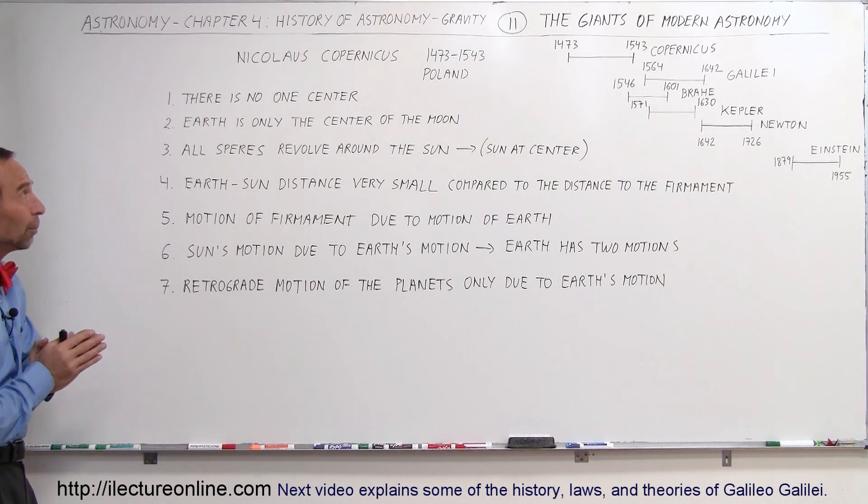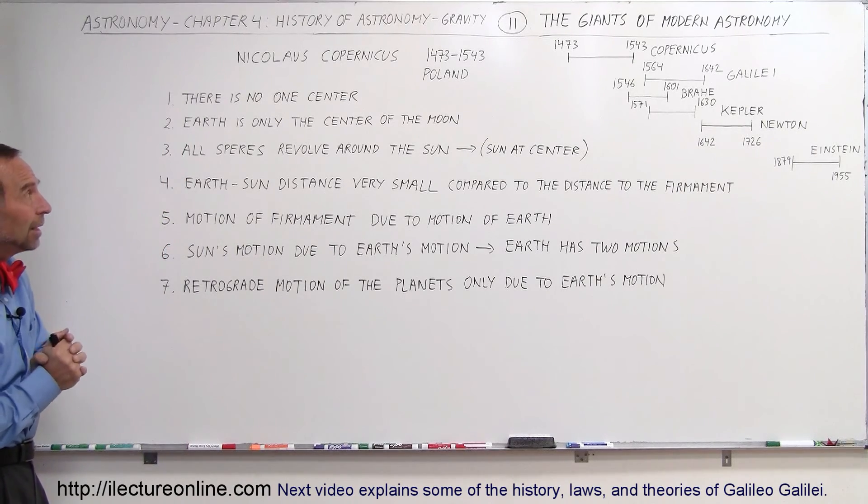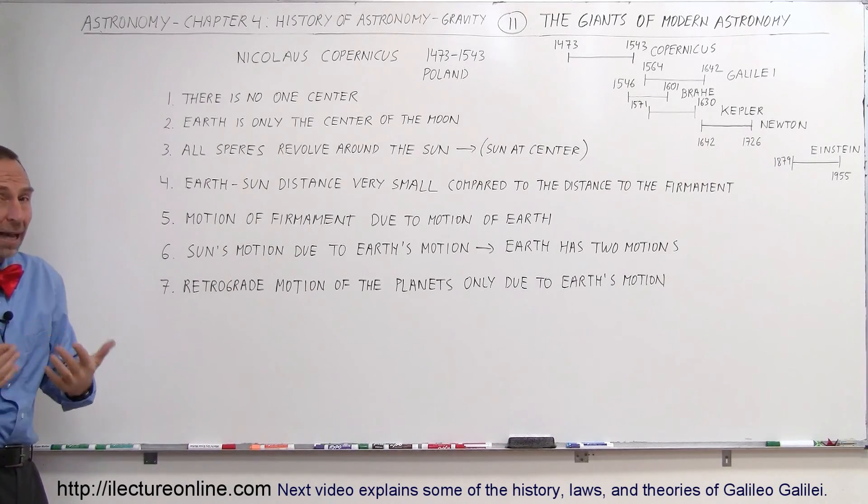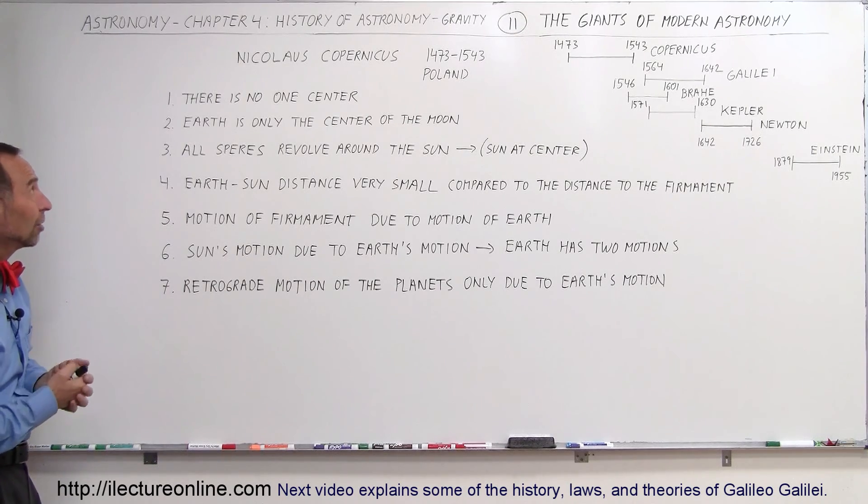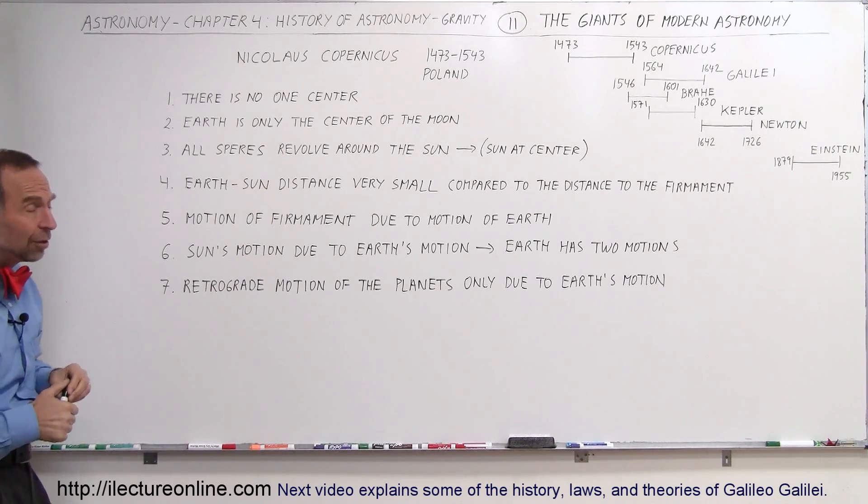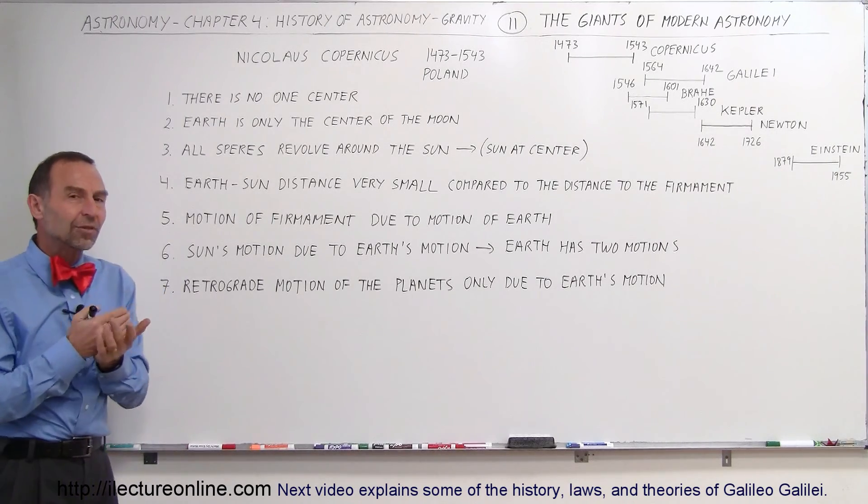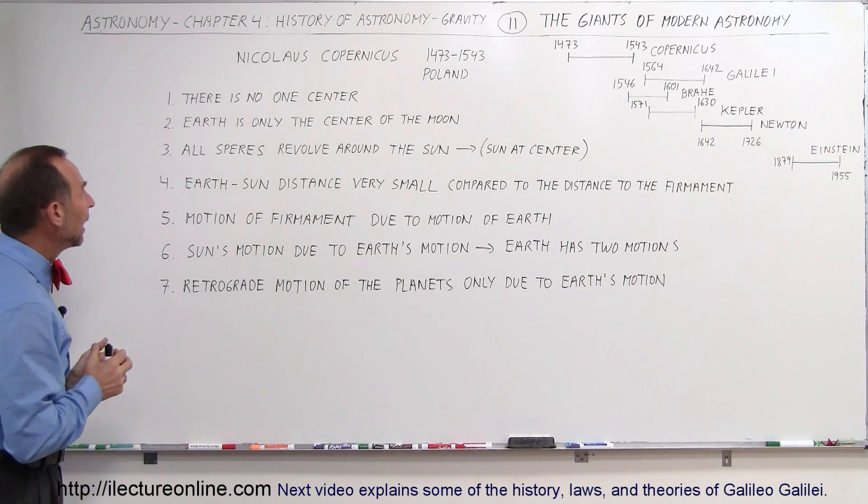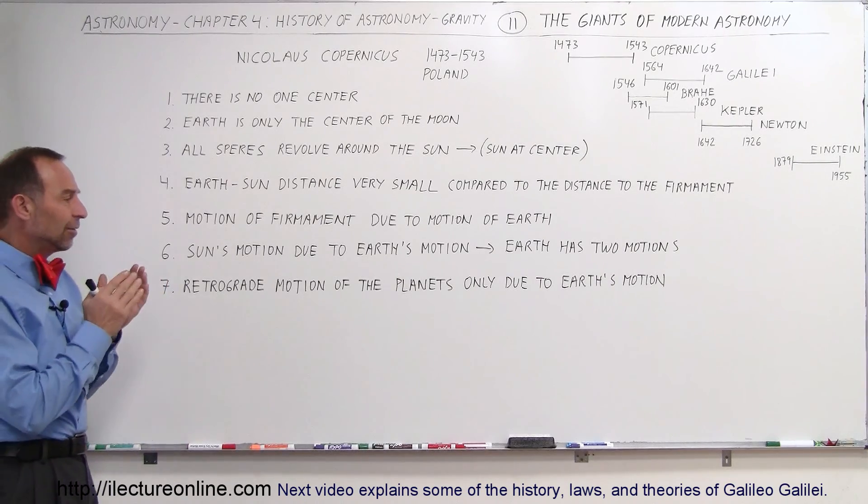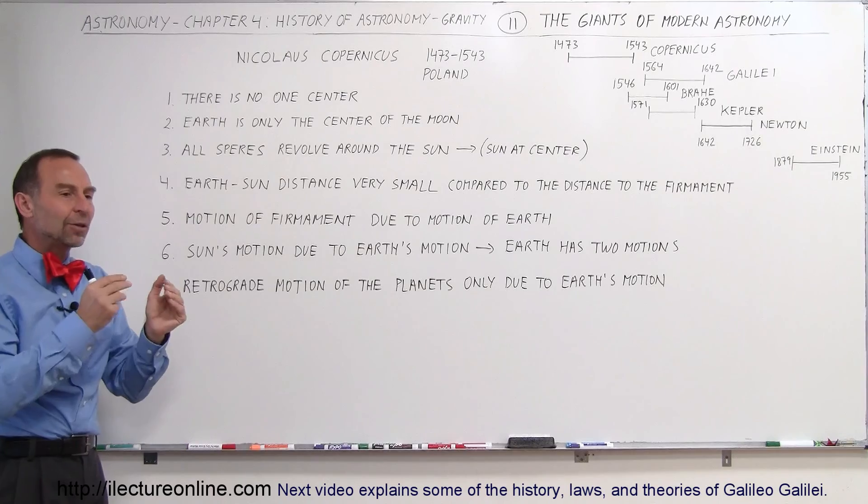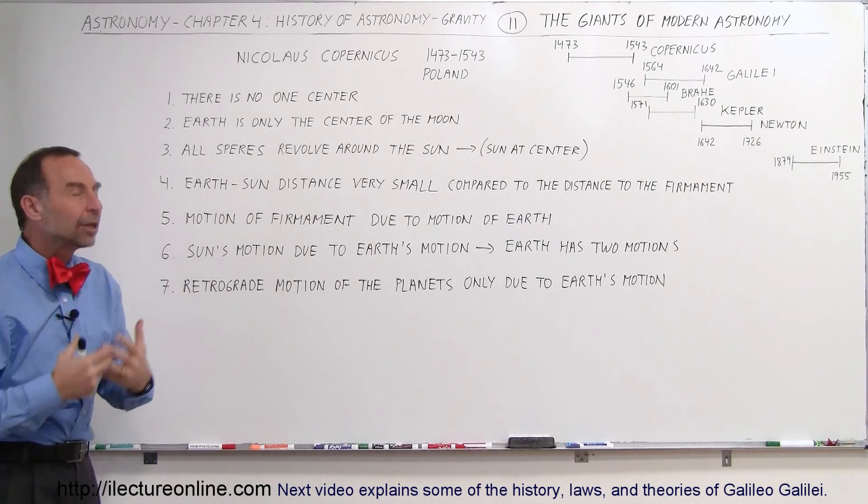So let's see what Copernicus brought to the table. Well, he was born in 1473 and he died in 1543. So he lived 70 years, which back in those days was a very nice and long life. He lived in Poland. He was educated in Italy. And so these were the seven statements that he made. He wrote them down. And for once since then, it was very well defined what he thought as a scientist was happening in our solar system.